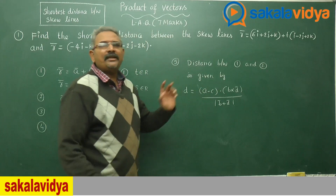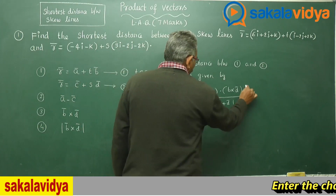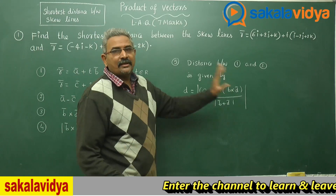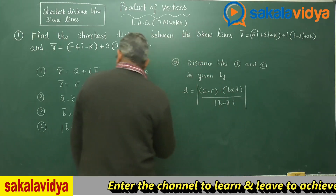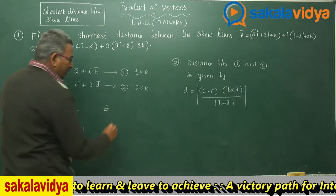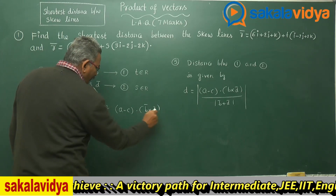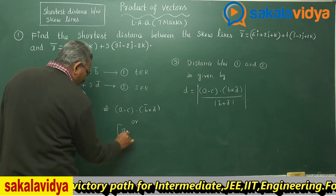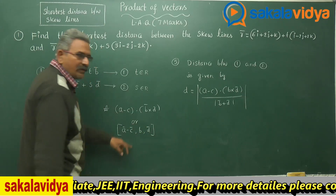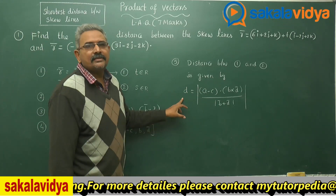Sometimes the distance value may be negative, but generally distance is measured in positive sense, so we have to keep the modulus. As a special case, instead of computing (ā − c̄)·(b̄ × d̄), you can alternatively find the scalar triple product [ā − c̄, b̄, d̄]. After calculating this and substituting in the formula, we get the distance between the skew lines.